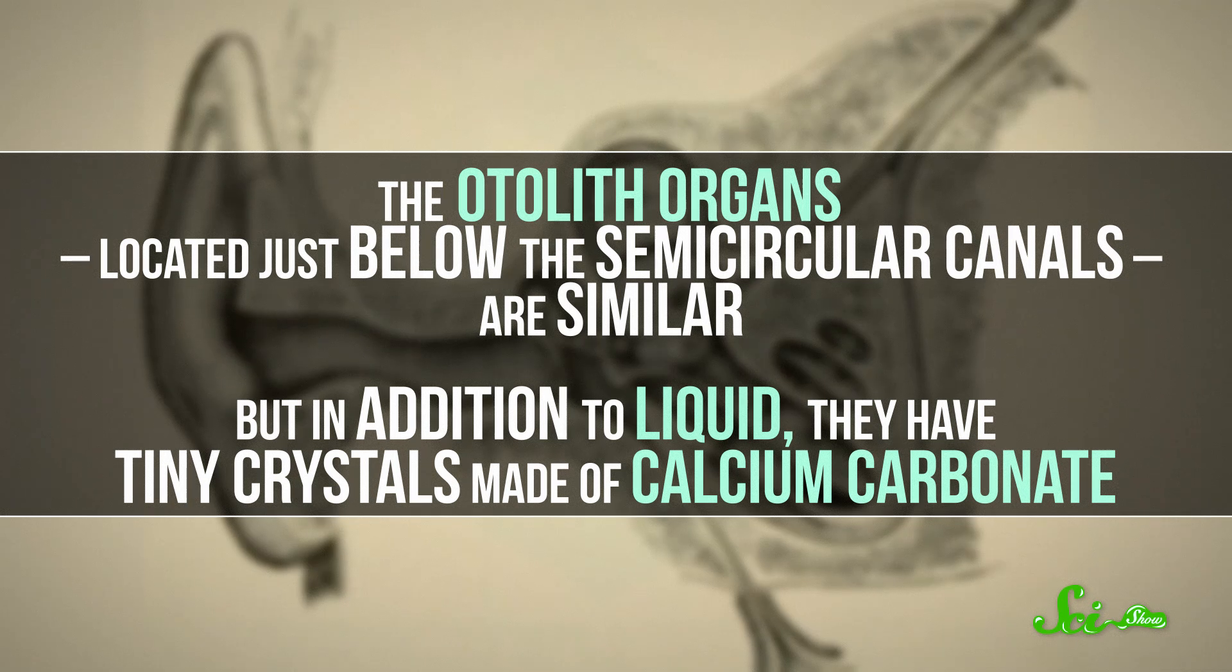The otolith organs, located just below the semicircular canals, are similar, but in addition to liquid, they have tiny crystals made of calcium carbonate. As the head moves, these crystals rub against the hair cells attached to the membrane, which send information to the brain stem. Your brain then sends information out to your eyes, joints, and muscles, so they can respond accordingly and help you navigate the world.